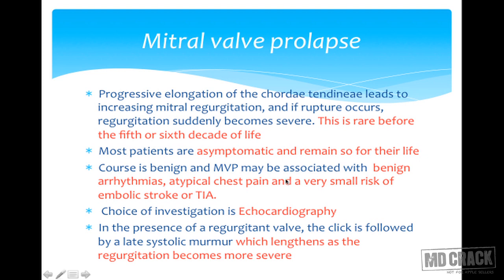Most patients are asymptomatic and can remain so — the course is usually benign. Mitral valve prolapse may be associated with benign arrhythmias, atypical chest pain, and a very small risk of embolic stroke or transient ischemic attack. Note for MCQs: the association includes benign arrhythmias and atypical chest pain. The transmission is autosomal dominant — autosomal recessive is the incorrect answer.